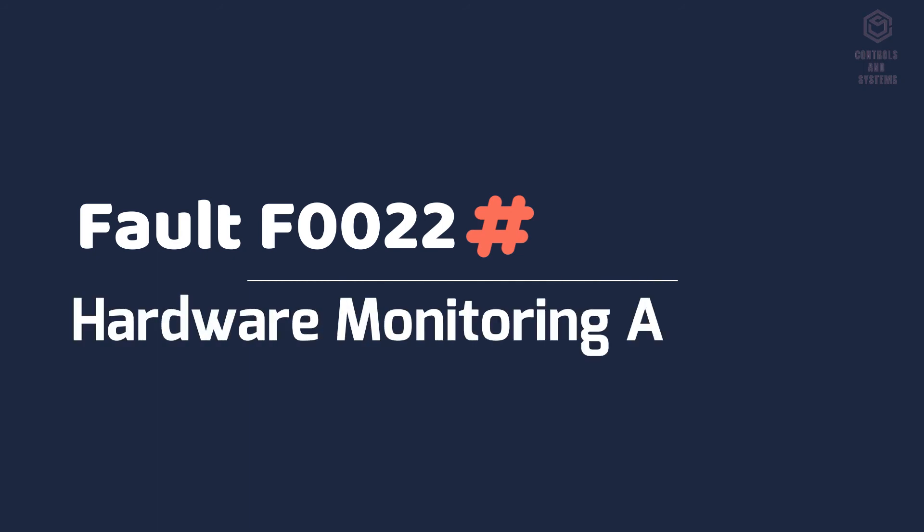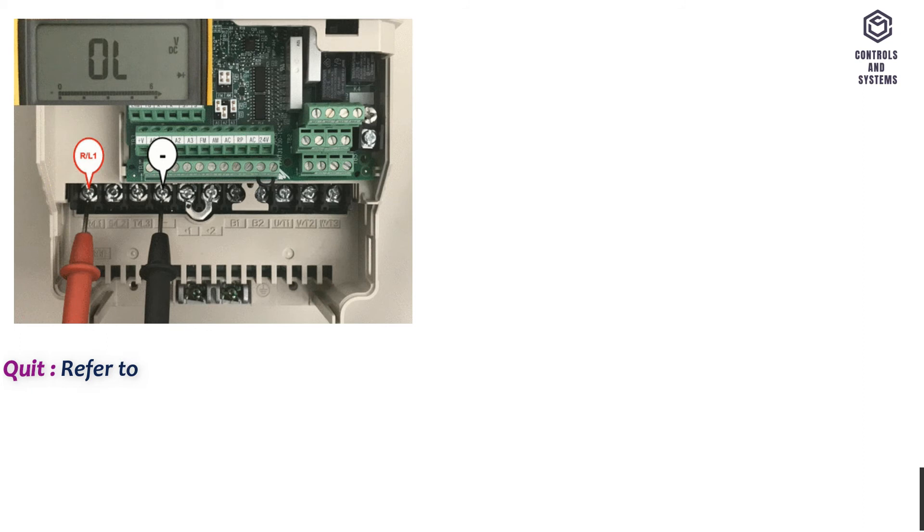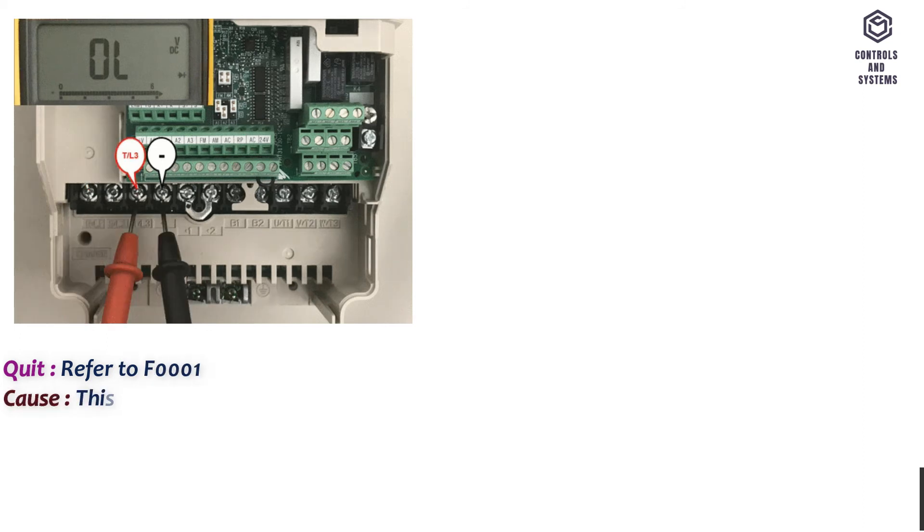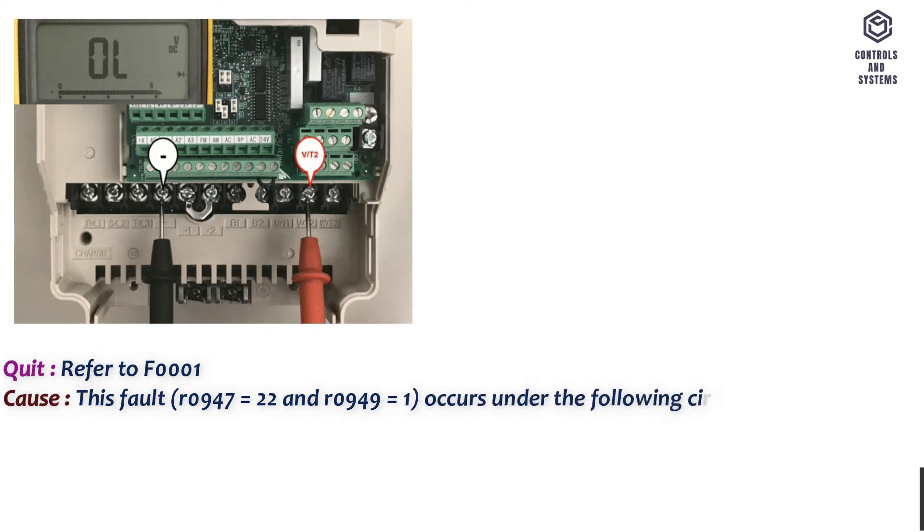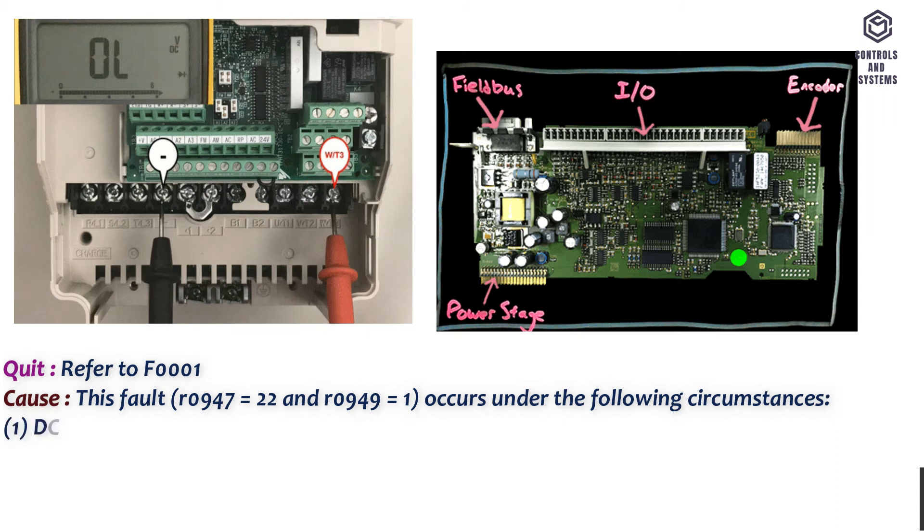Fault F0022 hardware monitoring active. Quit: Refer to F0001. Cause: This fault R0947 equals 22 and R0949 equals 1 occurs under the following circumstances.